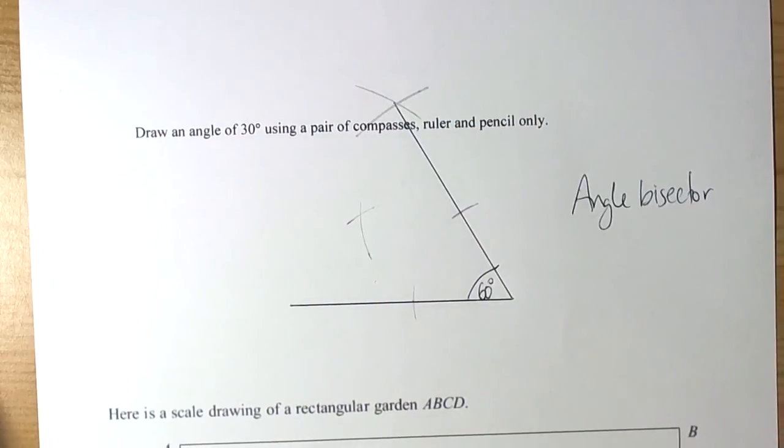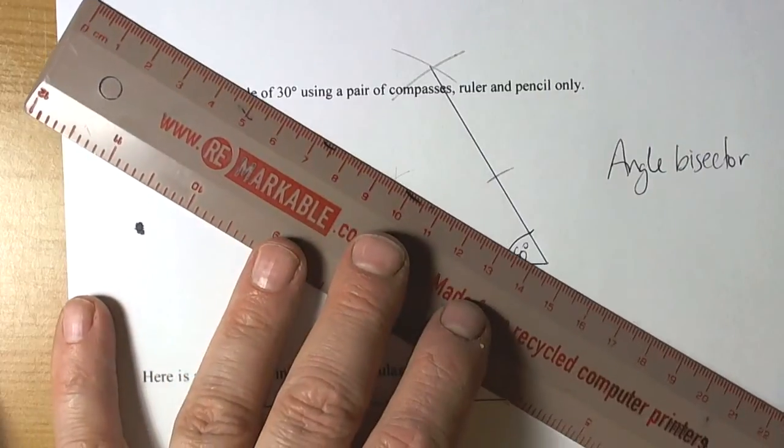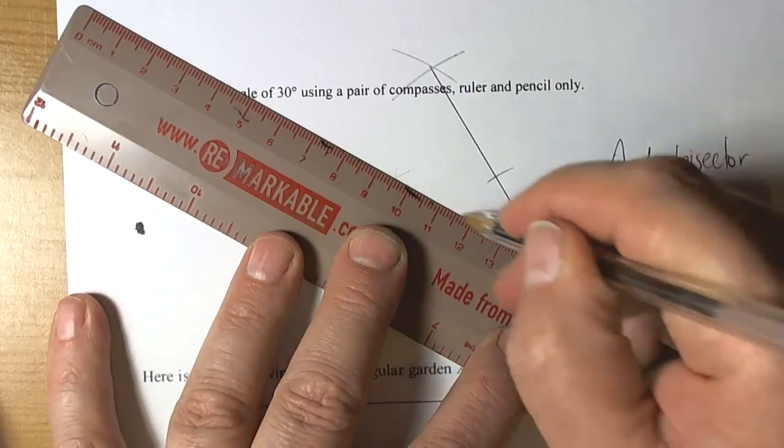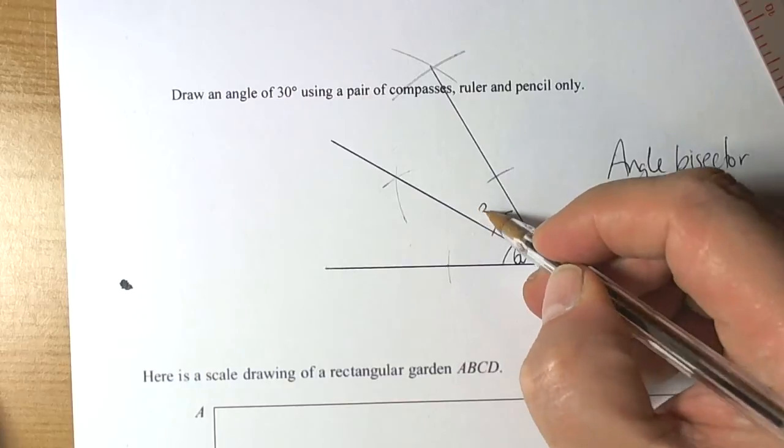That gives us our construction lines that allow us to draw from the centre of the angle through the two cross points to give us our 30 degree angle.